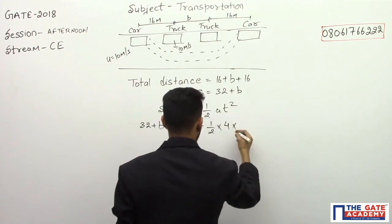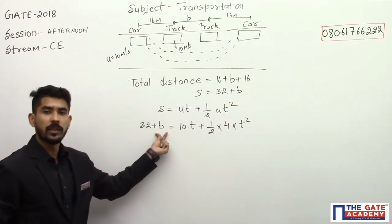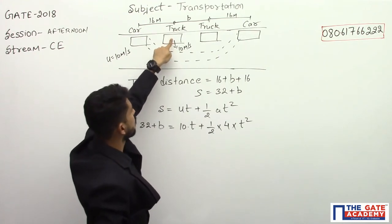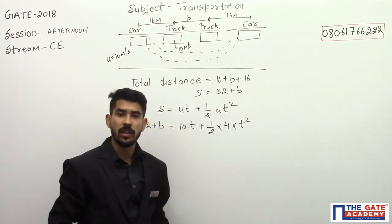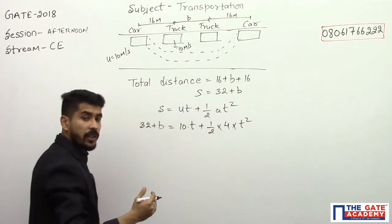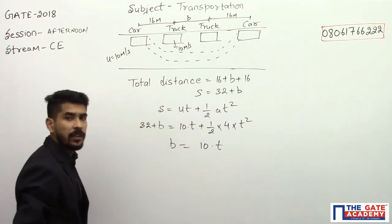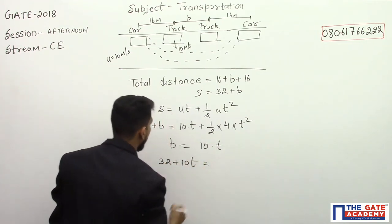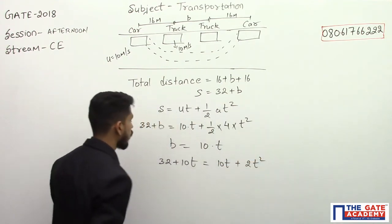Now b is the distance traveled by the truck from its initial position to its final position during the overtaking time t. The truck is moving at 10 meters per second, so b equals 10t. Substituting this, the equation becomes 32 plus 10t equals 10t plus 2t squared. The 10t terms cancel out.